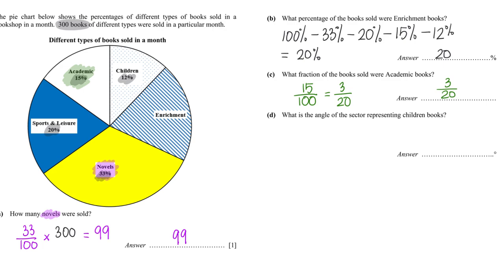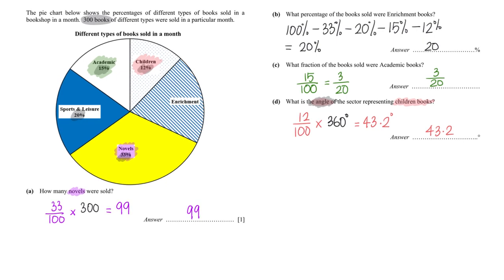What is the angle of the sector representing children's books? Since we are talking about the angle of a sector, 12% means 12 over 100 — and since we are talking about angle, we must multiply by 360 degrees. This gives me a value of 43.2 degrees. With that we have successfully solved this problem.